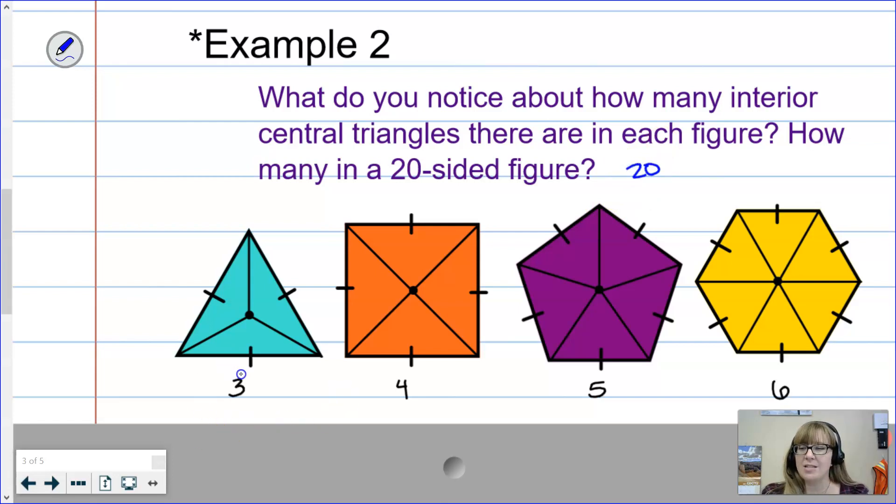I'm hoping your prediction was 20. We can come up with that number because in a three-sided figure we see three separate central interior triangles - one triangle for each side of the figure. We moved on to the four-sided figure and we see four sides, and each one of those sides creates another side in the central interior triangle. Continuing on that pattern, a five-sided figure has five and a six-sided figure has six, and it makes sense that a 20-sided figure will have 20 interior central triangles.